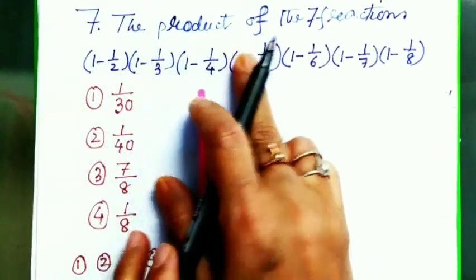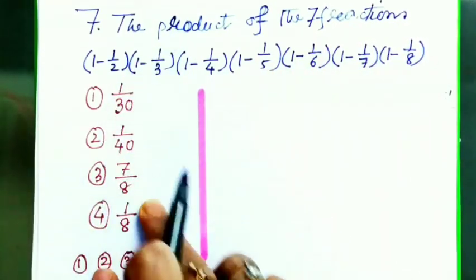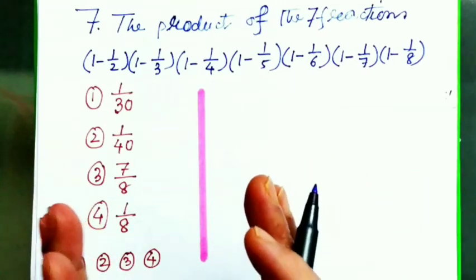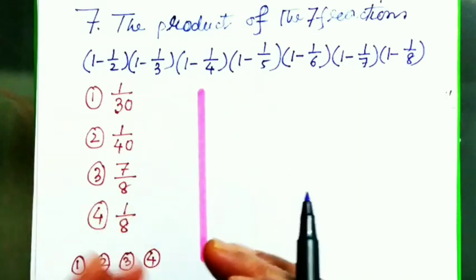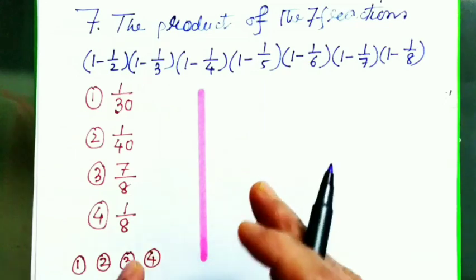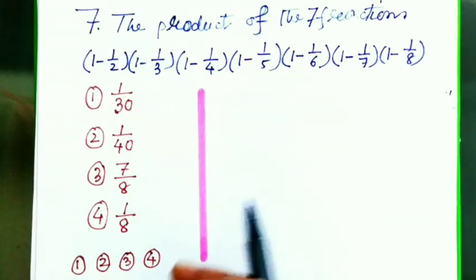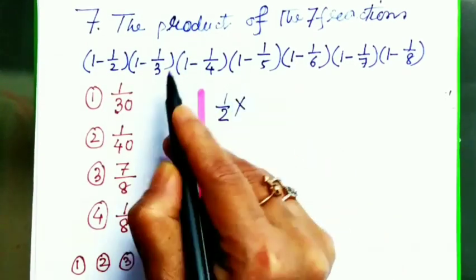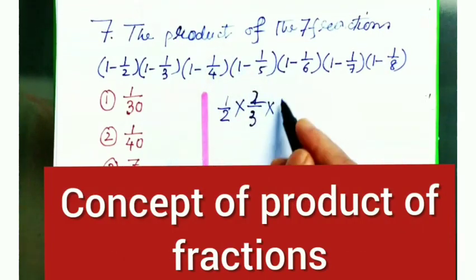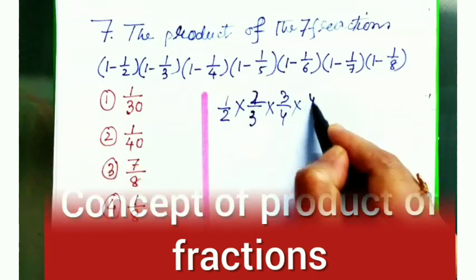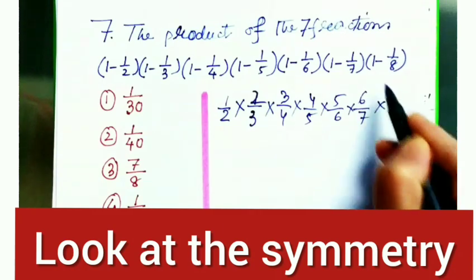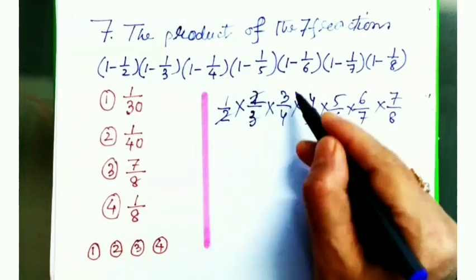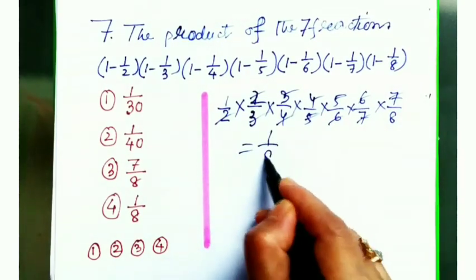Question number seven: The product of the seven fractions. Here it is given seven fractions and four options are given. I'm going to save our precious seconds. 1/2 into (3 - 1), that's 2/3, into (4 - 1), that means 3/4 like this, 4/5, 5/6, 6/7, 7/8. Now check the last one, 8 minus 1, that means 7/8. One, two, three, four, five, six, seven, everything okay. Now I'll cut it. You see, after cancelling, I got 1/8 is the correct option. So 4 is the correct answer.